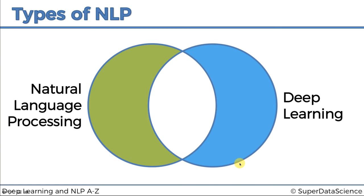These are all algorithms that have something to do with neural networks and deep learning — basically anything that's called a deep learning algorithm falls in here. They don't have to be natural language processing; they can be classification, they can be anything. Natural language processing is any algorithm, any model that has something to do with processing of natural language into machine terms.